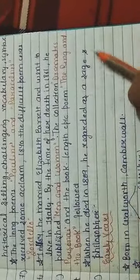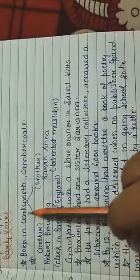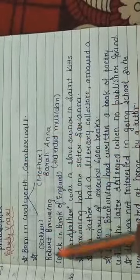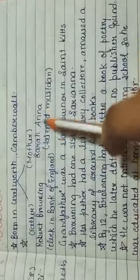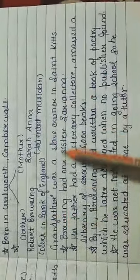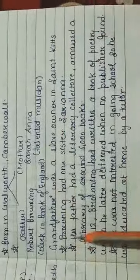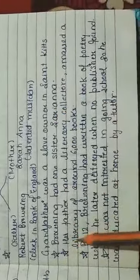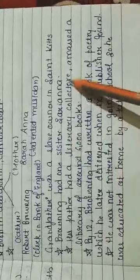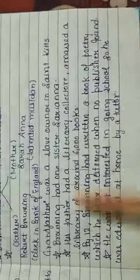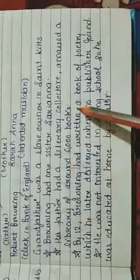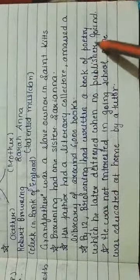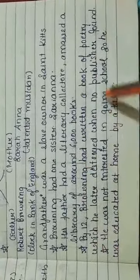When he died in 1889, he was regarded as a sage and philosopher. He was born in Walworth, Camberwell. His father's name was also Robert Browning, who was a clerk in the Bank of England, and his mother was Sarah Anna, a talented musician. His grandfather was a slave owner in St. Kitts. Browning had one sister, Sarianna. His father had a literary collection, a library of around 6000 books.